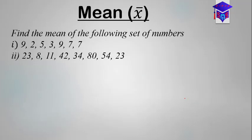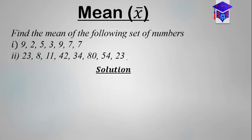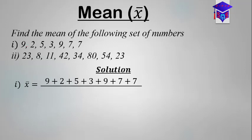Let's take some other examples. Find the mean of the following sets of numbers. The first one is: 9, 2, 5, 3, 9, 7, 7. The second is: 23, 8, 11, 42, 34, 80, 54, 23. As we did in the previous example, we sum all the values and divide by the number of values. For the first case, X̄ equals the sum of all the numbers divided by how many we have. We count: 1, 2, 3, 4, 5, 6, 7 — so divide by 7.